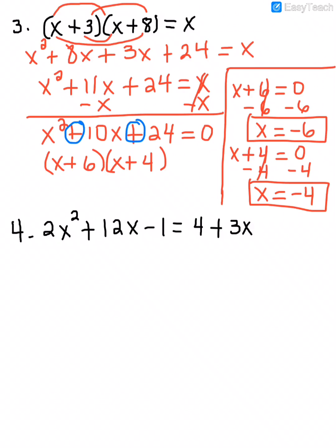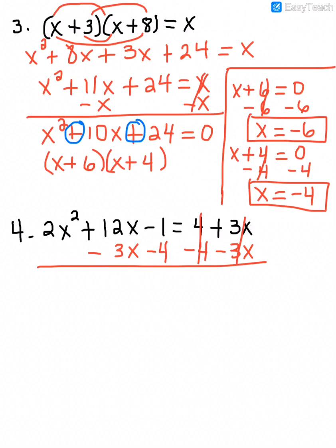In number 4, the first step is to get everything over to one side equal to 0. I'm going to subtract 4 from both sides and subtract 3x from both sides, giving me 2x squared plus 9x minus 5 equals 0. This is a trinomial with no greatest common factor. We can factor this trinomial by guessing and checking or by using the grouping method — I'm going to do guess and check.